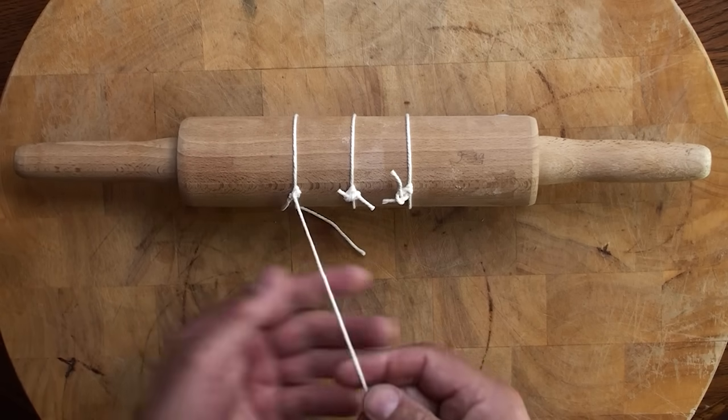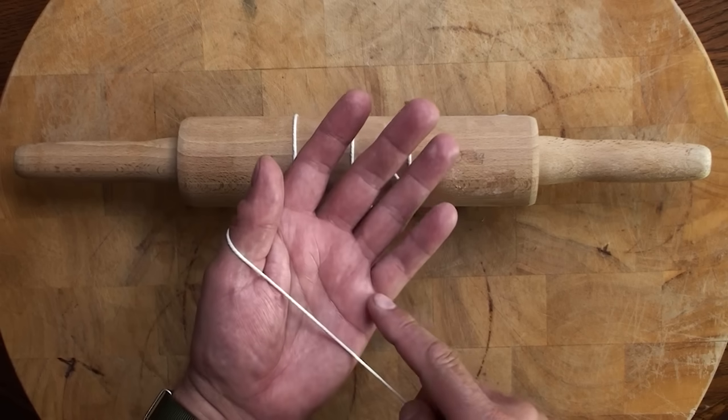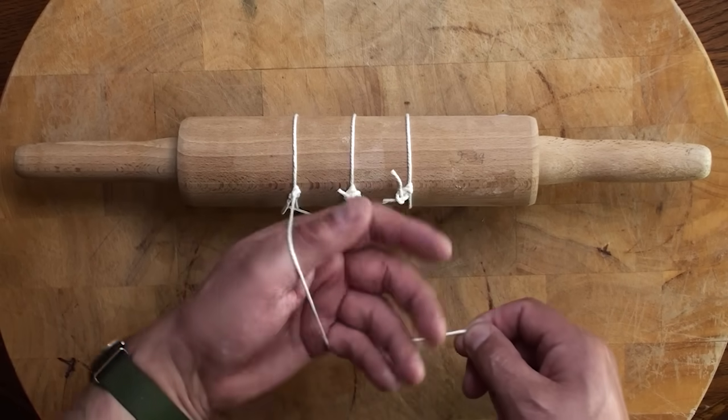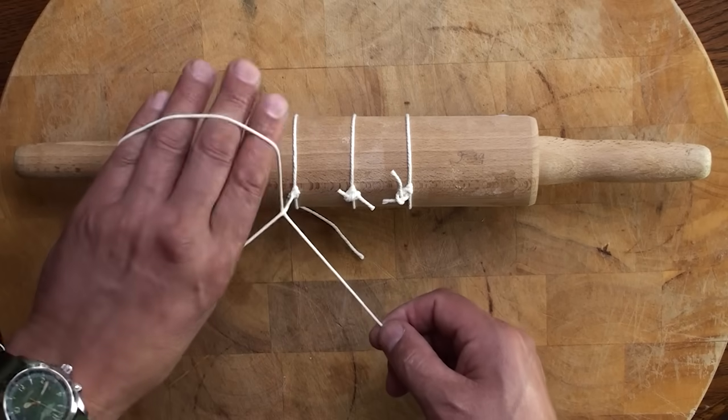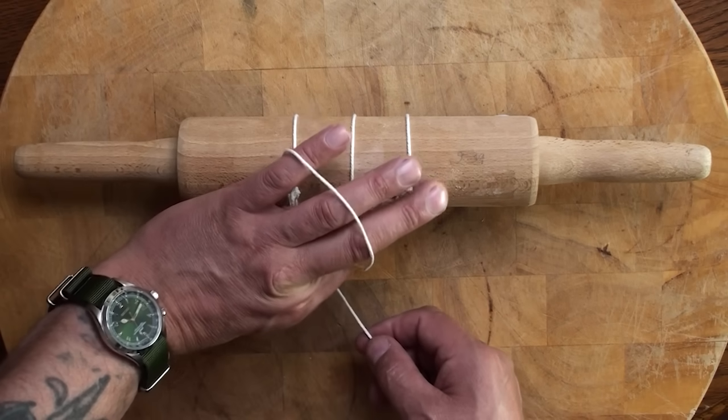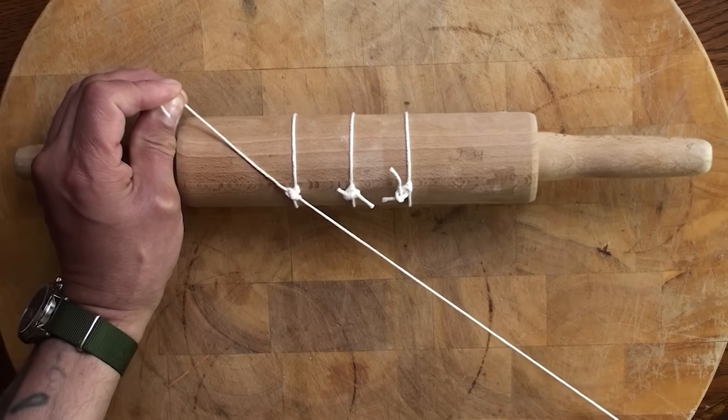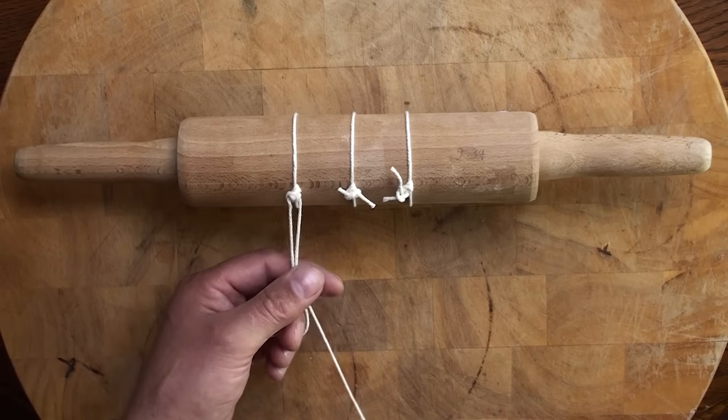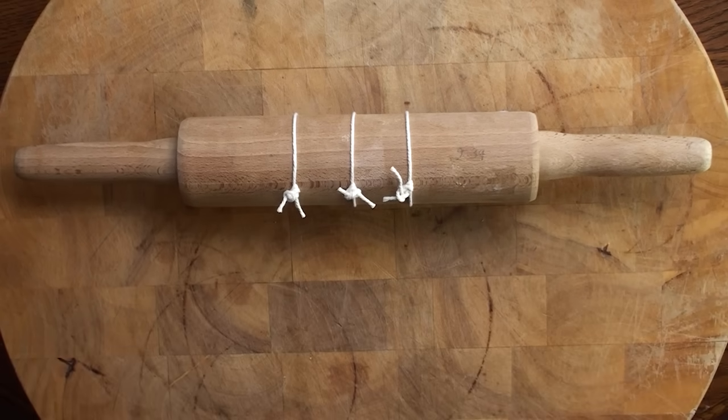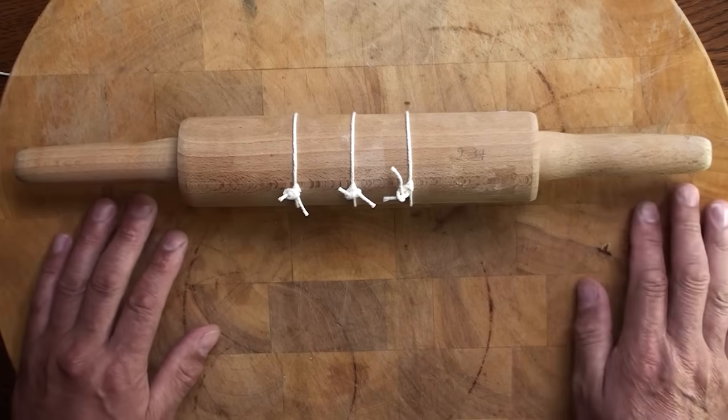Then we do the security knot. Remember, catch the string, cross your thumb, catch your string just in the side of your little finger there. Hold that tight, turn around, pincer movement, pick up your end of the string, pull through the loop, and secure off. Take scissors and cut.